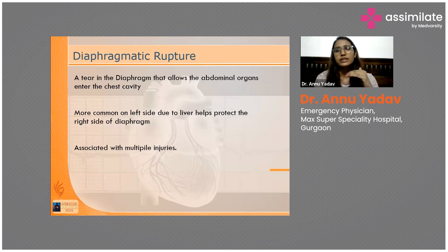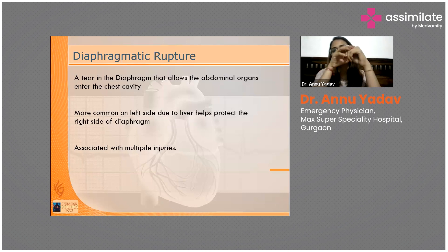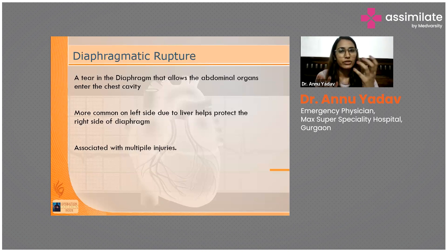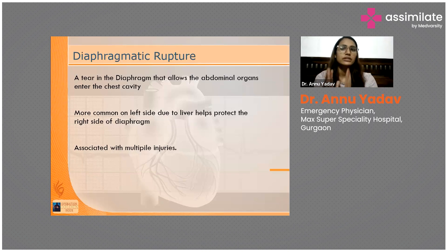We then realized the patient had a diaphragmatic rupture. In the first X-ray we were not able to appreciate it because pressure built up by the pleural cavity was compressing the diaphragm. Once we inserted the ICD, the pressure released from the pleural cavity and the stomach contents moved up — that's how we were able to appreciate the diaphragmatic rupture on X-ray. We then got a CT done to confirm it.